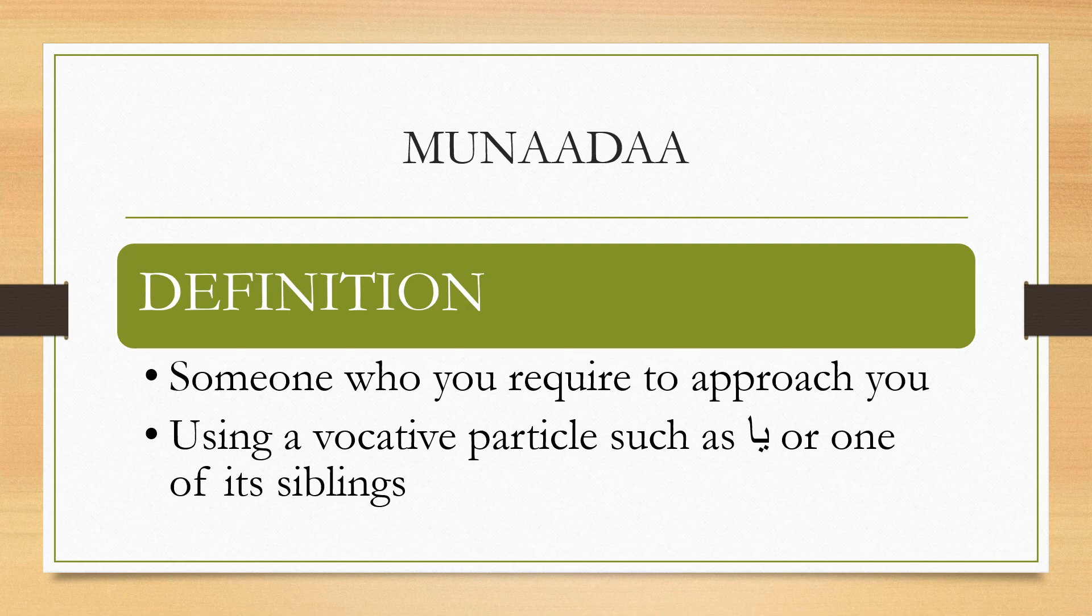So yaa or one of its siblings is called the vocative particle, and its siblings include, for example, hamza in 'a zaydu aqbil', or 'ay Ibrahim tafahham', or 'ayya abdullahi ta'al'. We have hamza and nida, we also have ayy and ayya, and we also have hayya - 'hayya Muhammad ta'al'. So here Muhammad is the munada, the one who is being called to come.